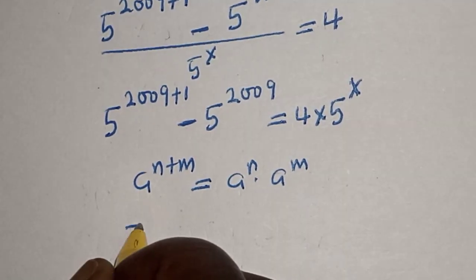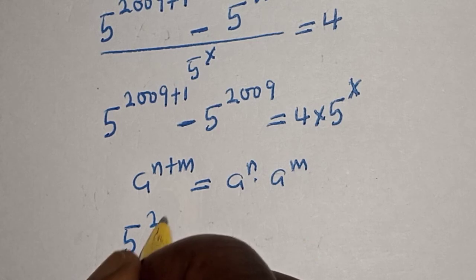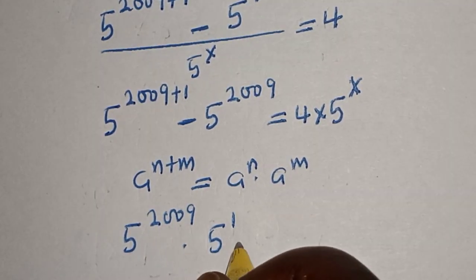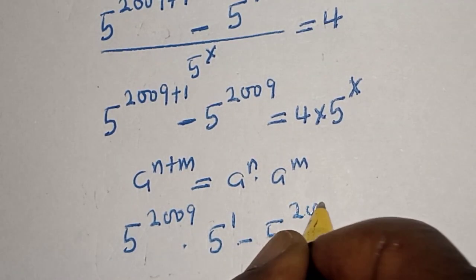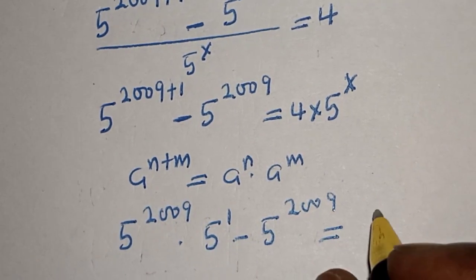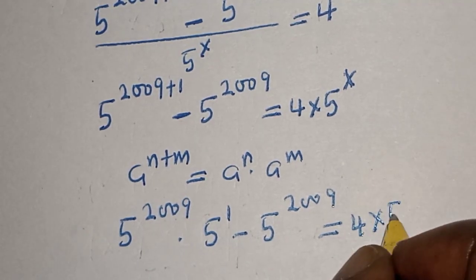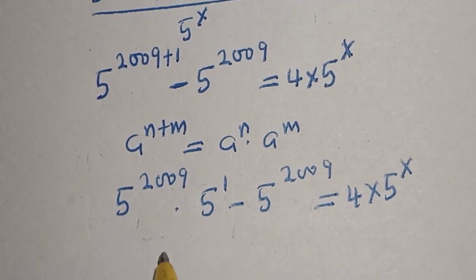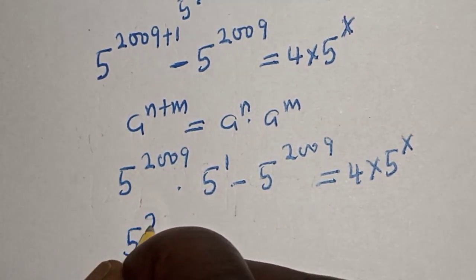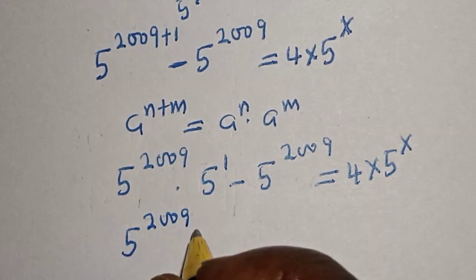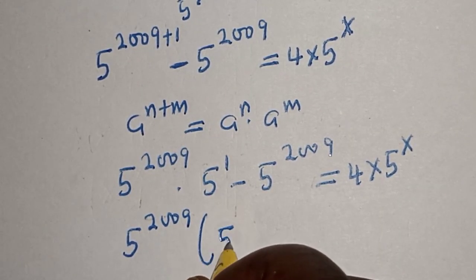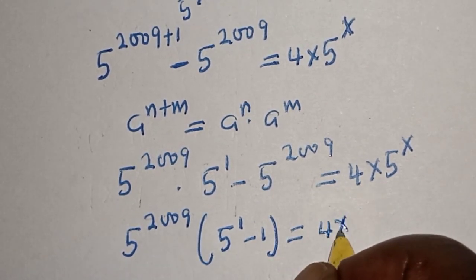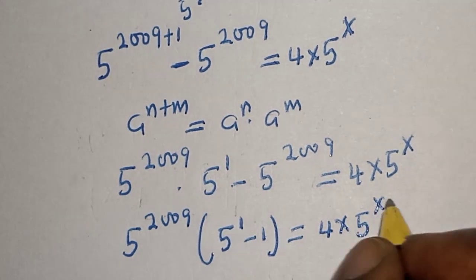So this becomes 5 raised to power 2009 multiplied by 5 raised to power 1, minus 5 raised to power 2009, is equal to 4 multiplied by 5 raised to power s. Since 5 raised to power 2009 is common, let's bring it out: 5 raised to power 2009 times bracket 5 raised to power 1 minus 1, is equal to 4 multiplied by 5 raised to power s.